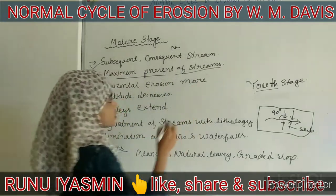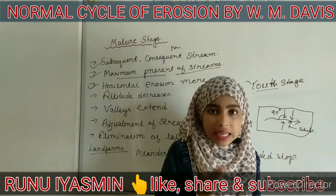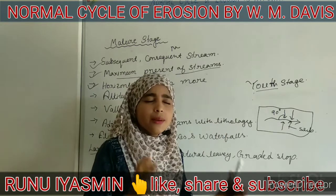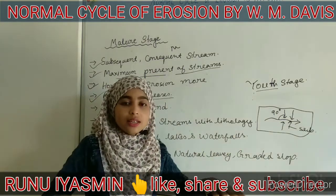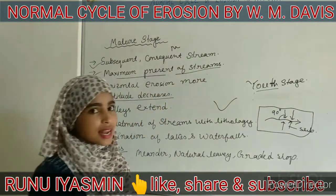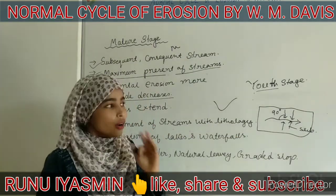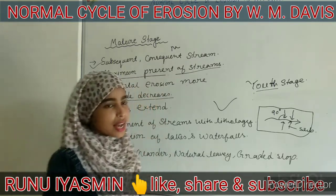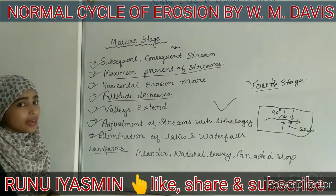Maximum presence of streams can be seen in the mature stage. Next is horizontal erosion mode — erosion has two types: vertical and horizontal. Here horizontal erosion dominates and vertical erosion is very minimal. Next, altitude decreases because of the horizontal erosion. The next characteristic is that valleys become very extended and very broad. Next is adjustment of streams with lithology and structure — consequent, subsequent, and tributary streams start adjusting with their lithological structure. Next is the elimination of lakes and waterfalls.